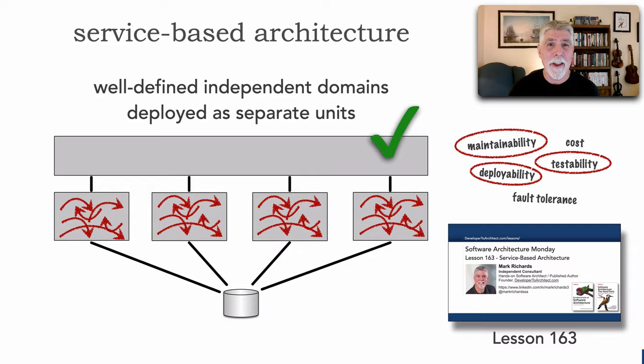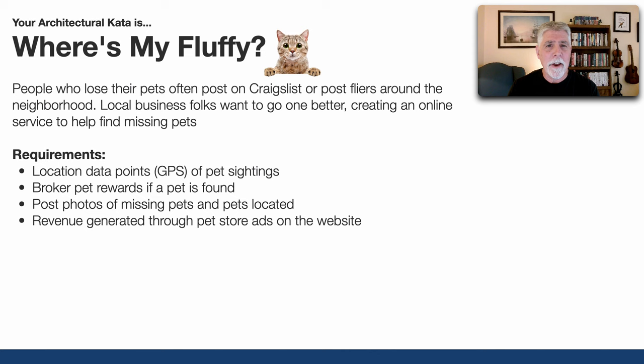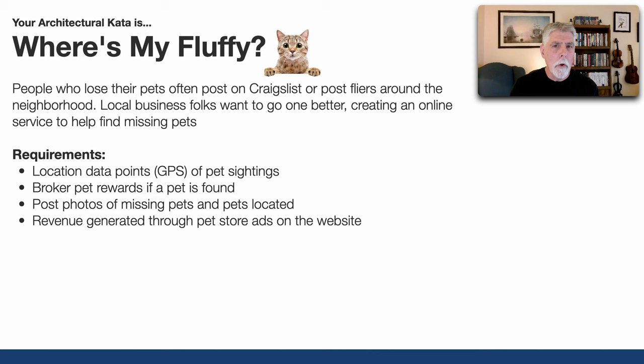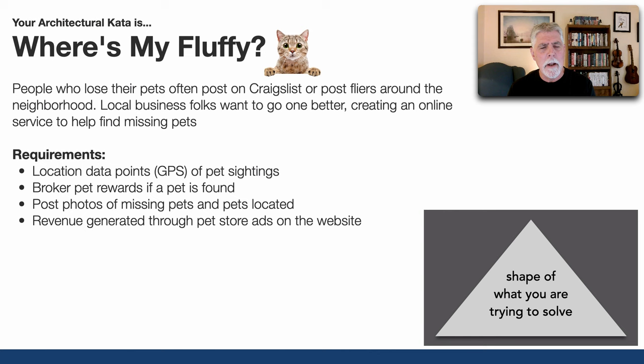Let me show you another example of applying domain-to-architecture isomorphism. This is a different kind of problem — an architecture kata called 'Where's My Fluffy.' People who lose their pets often post on Craigslist or put up flyers. Local business people want to create an online service to help find missing pets. The requirements include location data points of pet sightings — Google Maps does that well — and the ability to broker pet rewards if a pet is found.